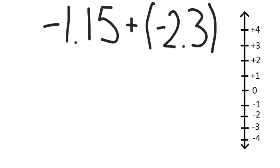Negative one and fifteen hundredths plus negative two and three tenths. The first thing we said was to make them both decimals or both fractions. We're lucky in this case — they're both decimals already. The second thing is we want to estimate, because it will tell us if our answer is reasonable and it's going to tell us what we really need to do with these numbers. Let's estimate.